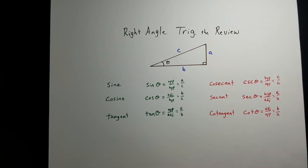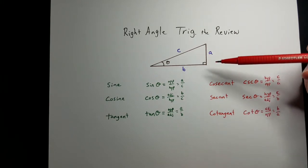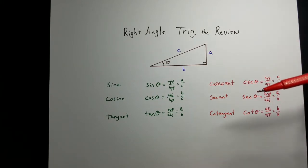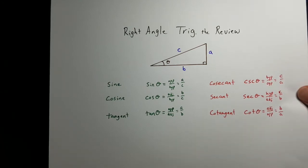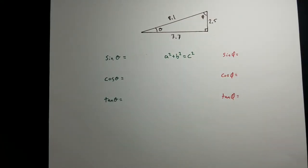Between these six trig functions, we should be able to find the angle and be able to find sides as well. If we know two things about this triangle, we should be able to find out everything else about it. So let's take a look at that. Here's a triangle that I've got set up, that I measured the sides.